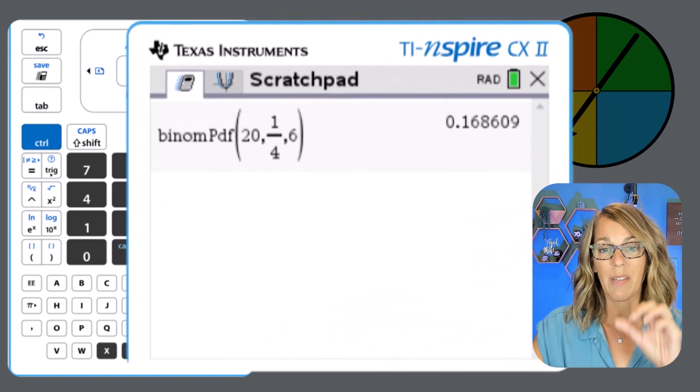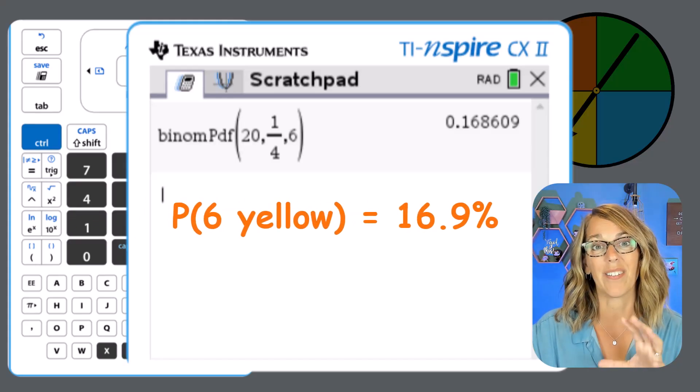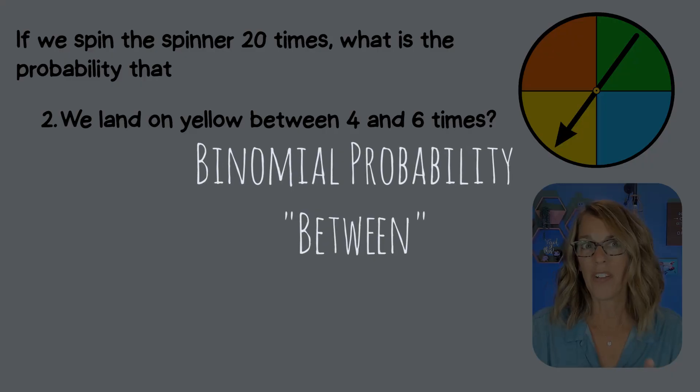So it gives me this probability 0.16809, which is going to be about 16.9%. Let's move on to question number two.